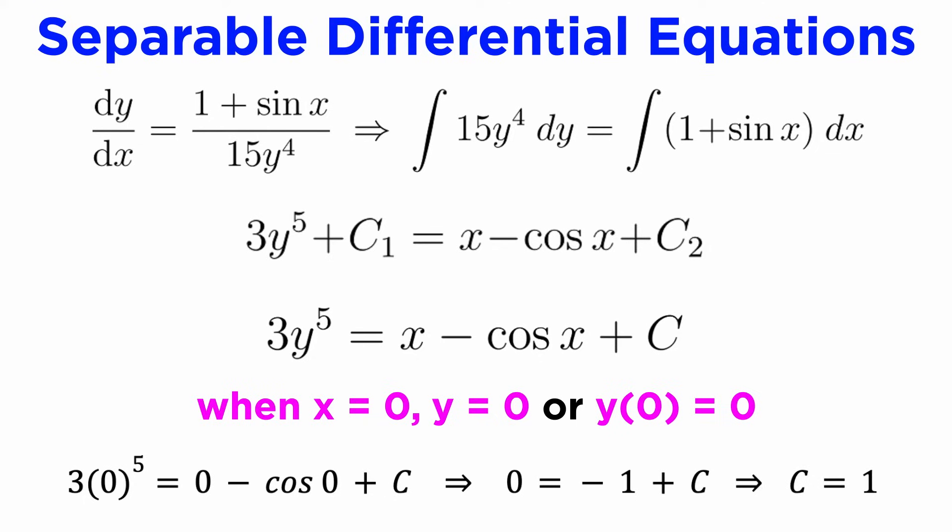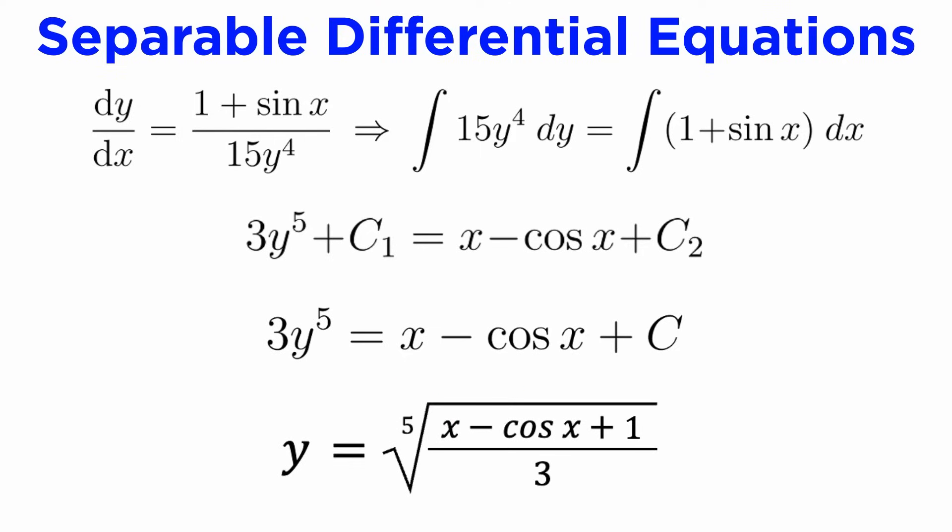Solving for c gives c equals 1, and now all we need to do is write down our explicit particular solution, which will be y equals the fifth root of x minus cosine of x plus 1, all divided by 3.